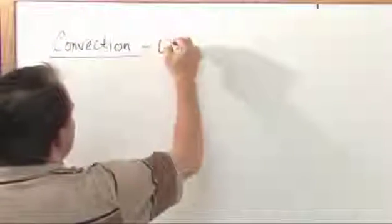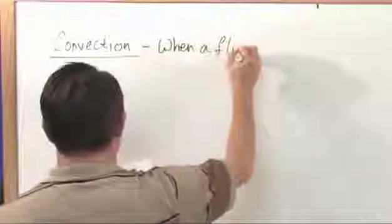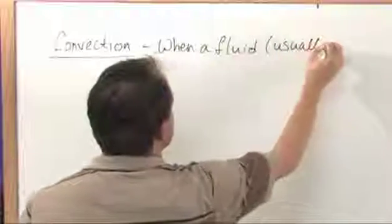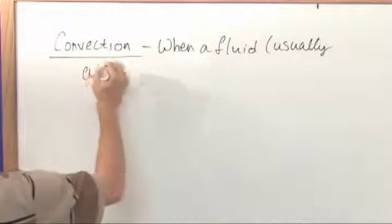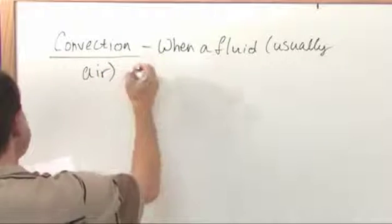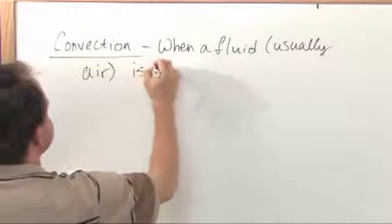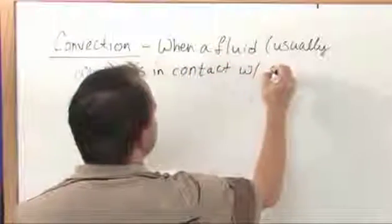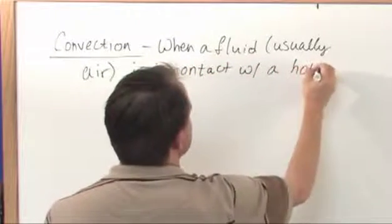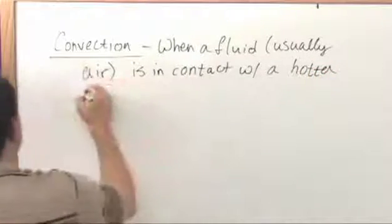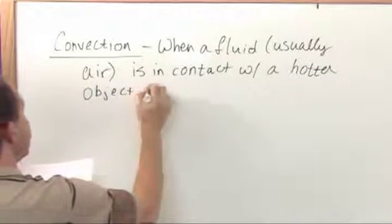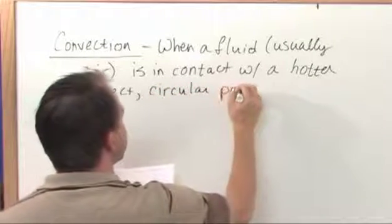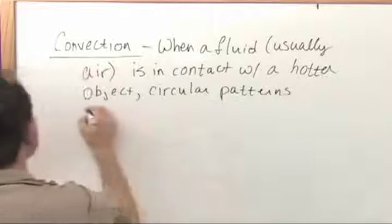Basically, convection happens when a fluid—and I'm going to put here usually air, it can happen in any fluid, but usually air—is in contact with a hotter object. Circular patterns of heating and cooling develop.